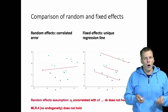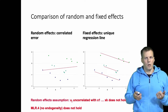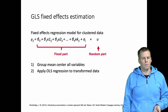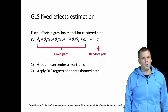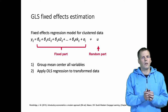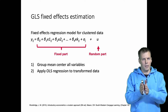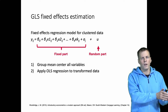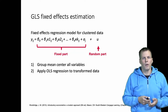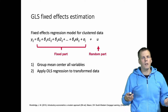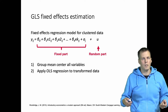So how does the fixed effects estimation approach actually work? It's fairly easy to understand. The idea is that we group mean center all variables — we subtract the group mean of each variable from its observed value — and then we run a normal overall regression model on the transformed data. Let's take a look at an example of how this is done.